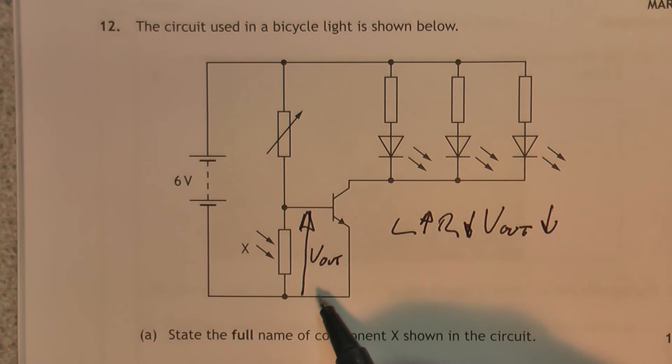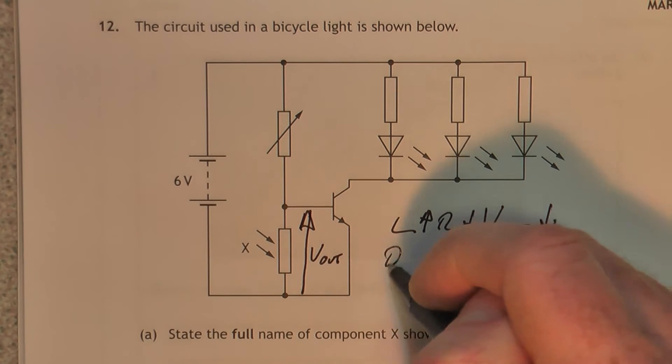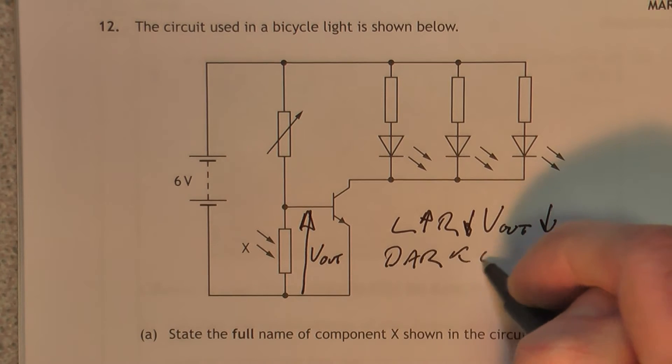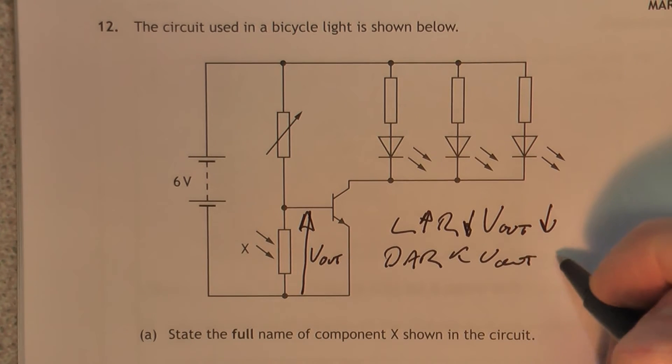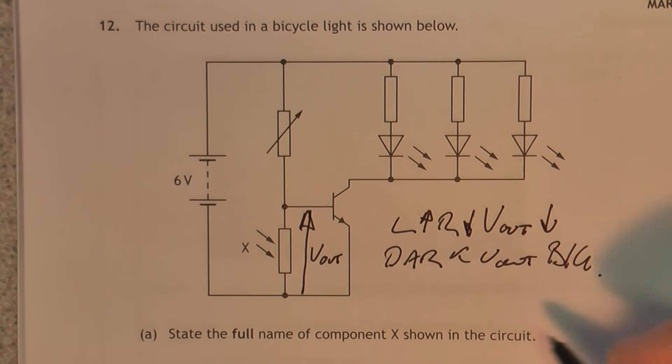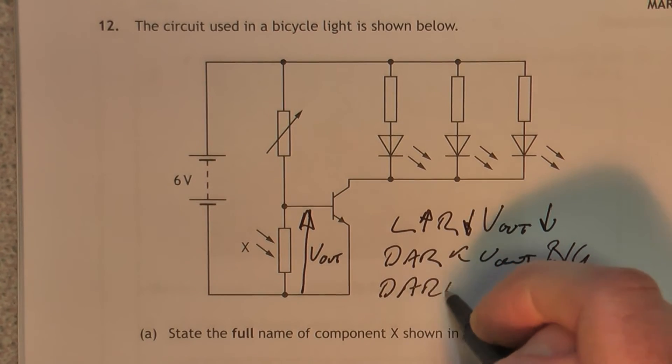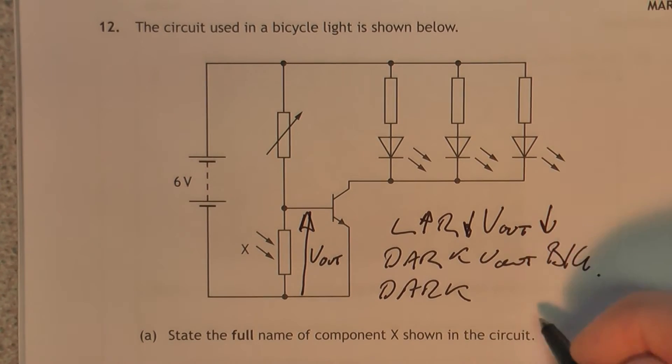So in the light, V out is small. The other way to think of it, in the dark, V out is big. So in the dark, the transistor will switch on.